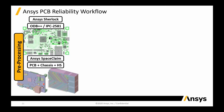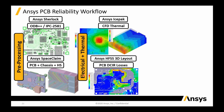Usually there's a bit of geometry simplification at this stage before moving on to the simulation, but once that's ready we go over to Electronics Desktop where we have tools like IcePack and HFSS 3D layout. In 3D layout we apply current and voltage settings to compute the heat dissipated inside the copper traces and vias.